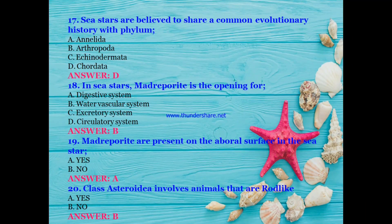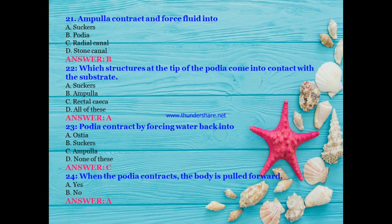Madriporite is present on the aboral surface of sea stars — yes, correct. Does class Asteroidea involve animals that are rod-like? No — class Asteroidea involves animals that are star-shaped. Ampulla contracts and forces fluid into: suckers, podia, radial canal, or stone canal? The answer is B — podia.